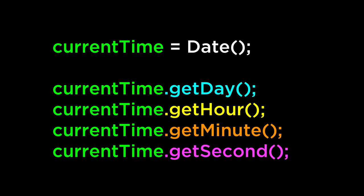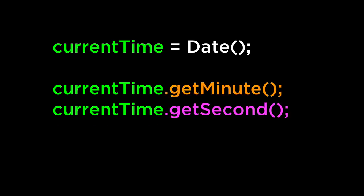The JavaScript date object has many methods for getting specific information. The list shows that we can get the day, the hour, the minute, and the second the date object was created. For this video, we will focus on the minutes and seconds, because these change fast enough for us to view as dynamic data.